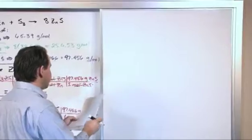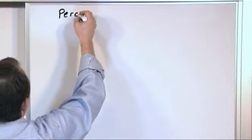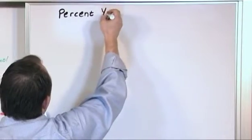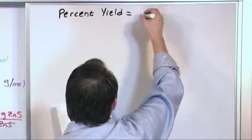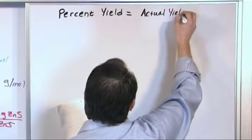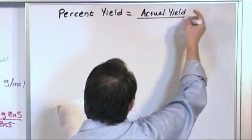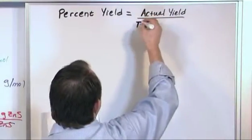What this is, I'll just write it down: percent yield. And this is how we calculate it. Basically, all we say is we take the actual yield - this is what you measure, what you actually yield in the lab, it's not perfect - you divide it by the theoretical.